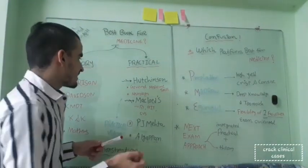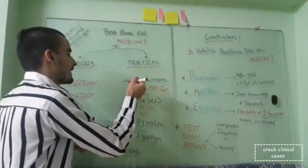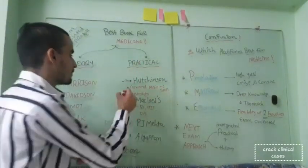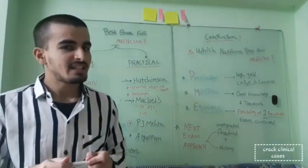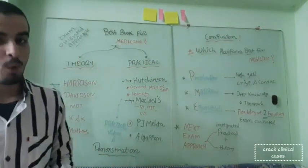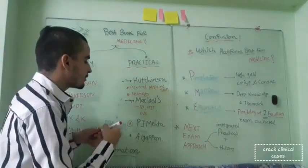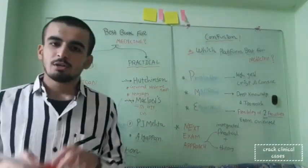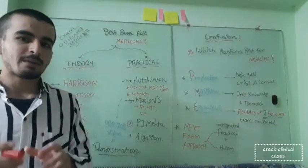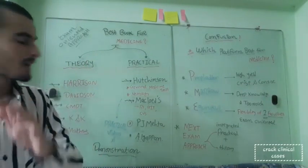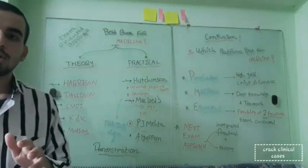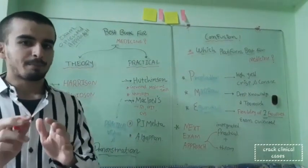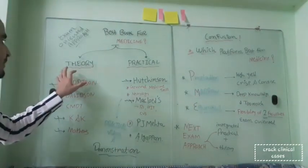If you want to get the best out of the knowledge, my recommendation is you can read the general medicine skill part from Hutchinson. For neurological examination, you can choose Hutchinson for clinical examination book. From McLeod's, you can read the respiratory systems, GIT systems, and cardiovascular systems for your clinical and practical exams. PJ Mehta is quite a good book; you can prefer Alkappal, which is also a simple book for your practical purposes.